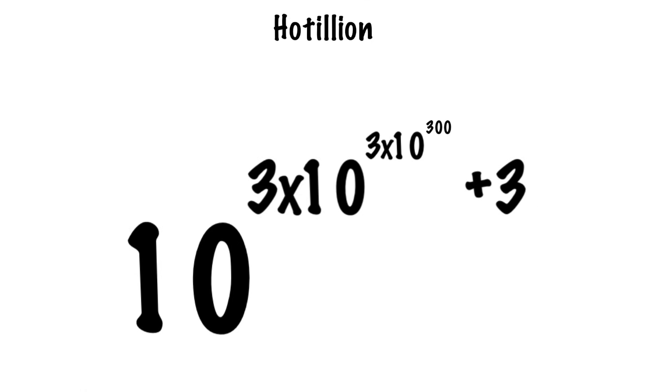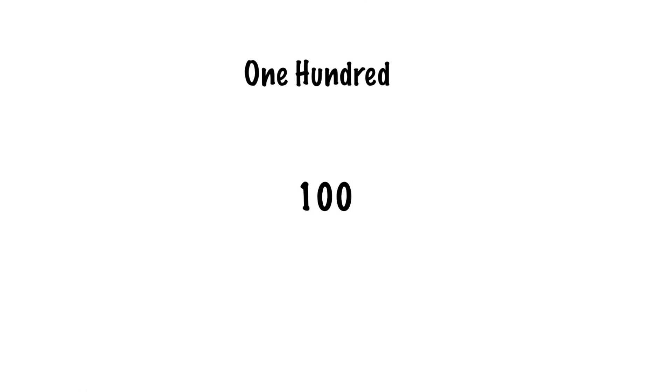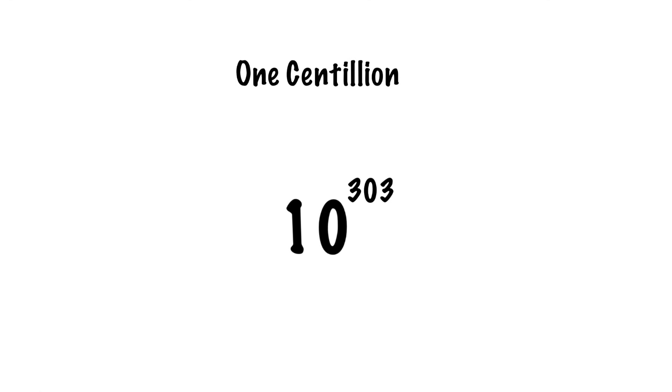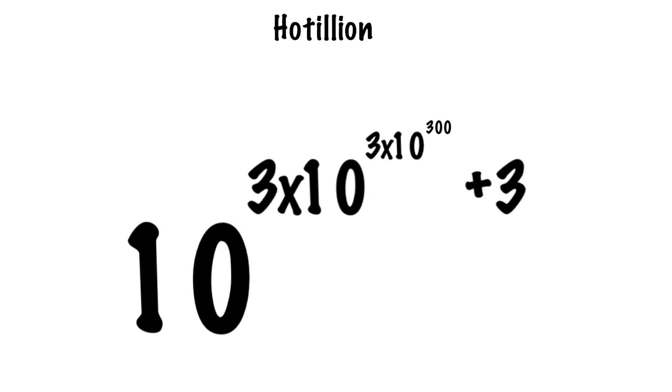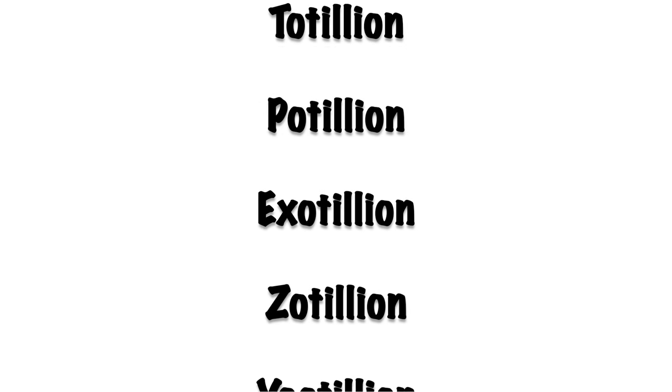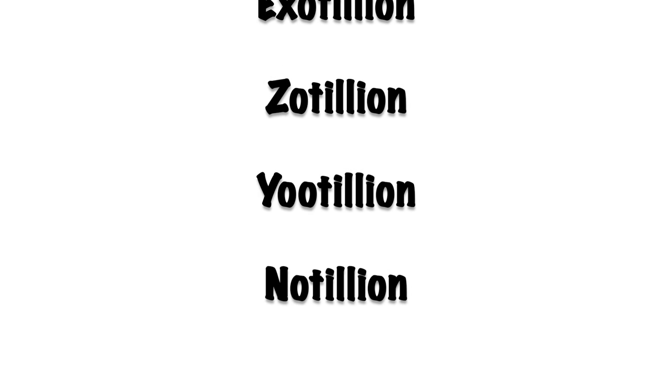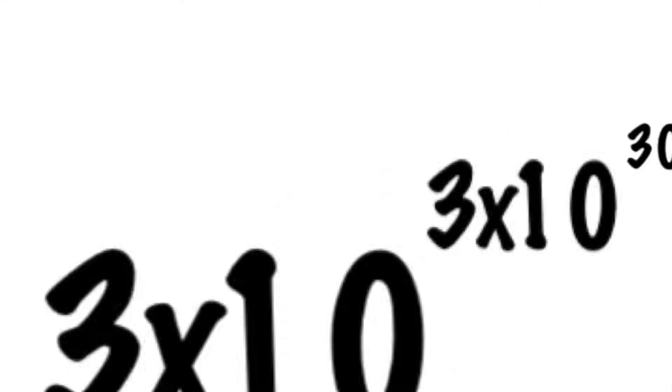Going back and looking through all of the tiers, we have had 100, 1 Centillion, 1 Hectillion, and now we are at 1 Hotillion. With the top exponent increasing by 300 each time, you get Botillion, Trotillion, Totillion, Potillion — each of those corresponds to 600, 900, 1200, and 1500 in the top exponent. And then once you've worked your way through all those, you get to 1 Kalillion.